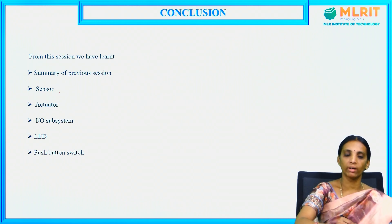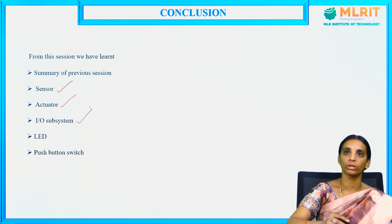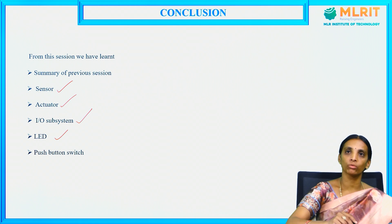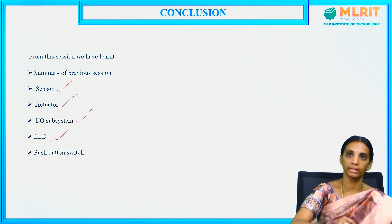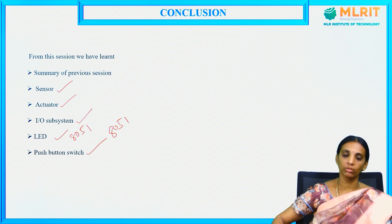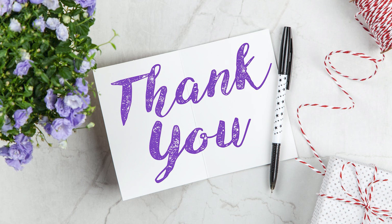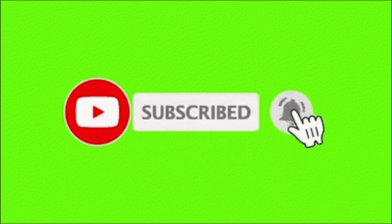In this session we discussed what a sensor is, examples of sensors, what an actuator is, what the IO subsystem is, how it is used with the processor, and the LED — basic current flow through the LED, how to interface the LED to the 8051 microcontroller, and the push button switch — its basic operation and how it is interfaced to the microcontroller. Thank you.